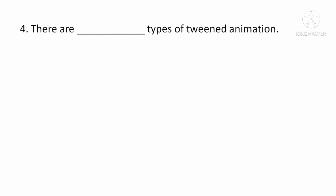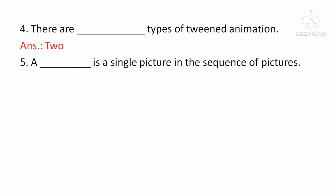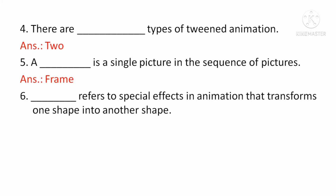Next, there are two types of tweened animation. Next, a frame is a single picture in the sequence of pictures. Next, shape tween is a special effect in animation that transforms one shape into another shape. इसे कहते हैं, shape tweening.